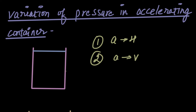The acceleration of the container can be broadly classified into two categories. One is when the acceleration is in the horizontal direction — when the container accelerates rightwards or leftwards. The second category is when the acceleration is vertical, either up or down. Any other acceleration at an angle can be taken as the superposition of its horizontal and vertical components, and then you can use vector algebra.